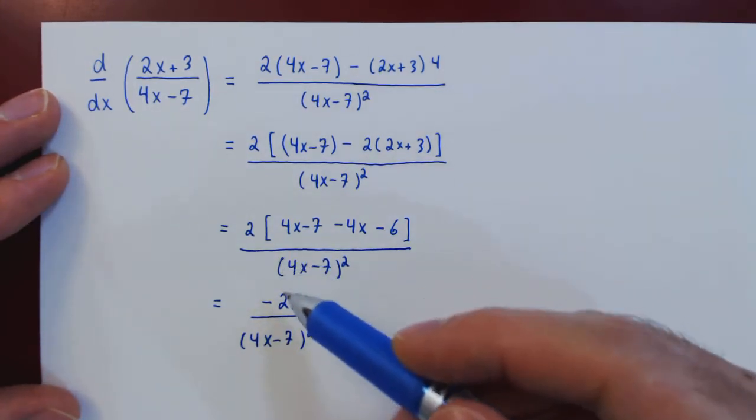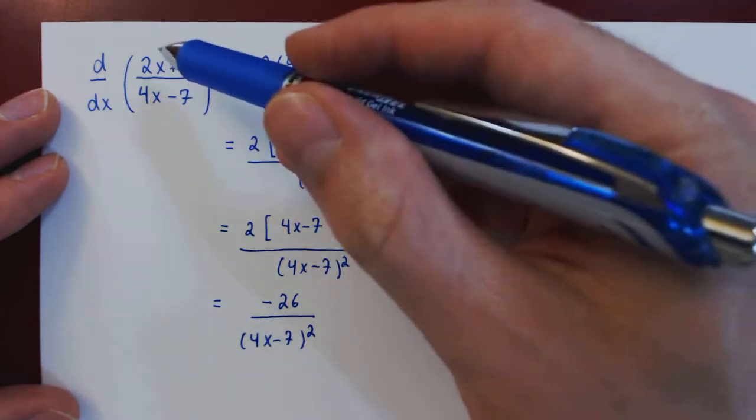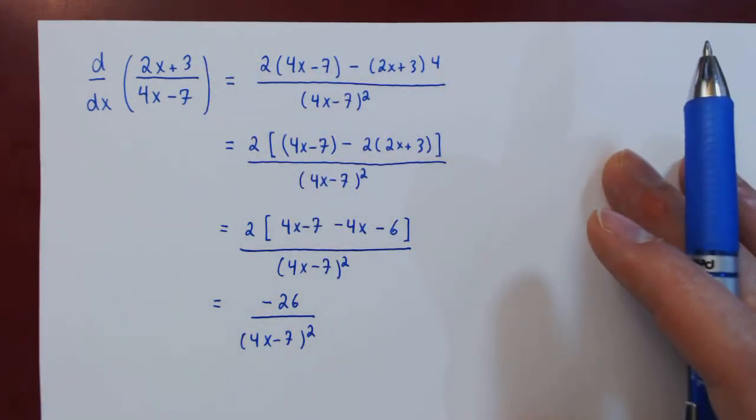And so we're done. We have now the simplified derivative of the original quotient. And that's it.